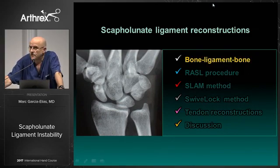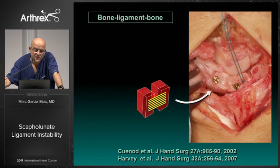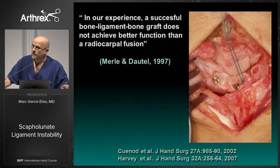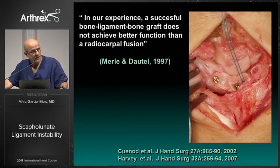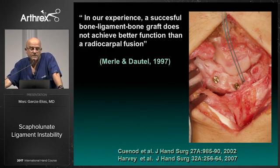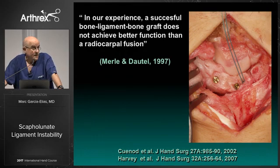Bone-ligament-bone is one of the earliest proposed techniques. We obtain two pieces of bone with the ligament in between, and just hope for the two pieces of bone to heal in the scaphoid and the lunate, which are vascularly compromised bones. But look at what Merle concluded: in their experience, a successful bone-ligament-bone graft does not achieve better function than a radioscaphoid fusion. Actually, what we are doing is a very complex operation that ends up being fibrotic.